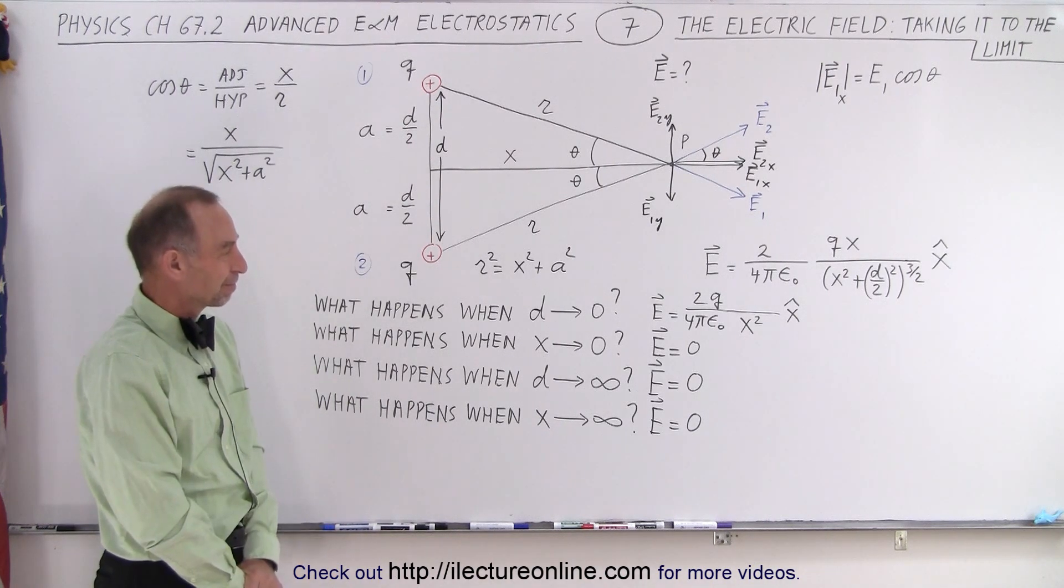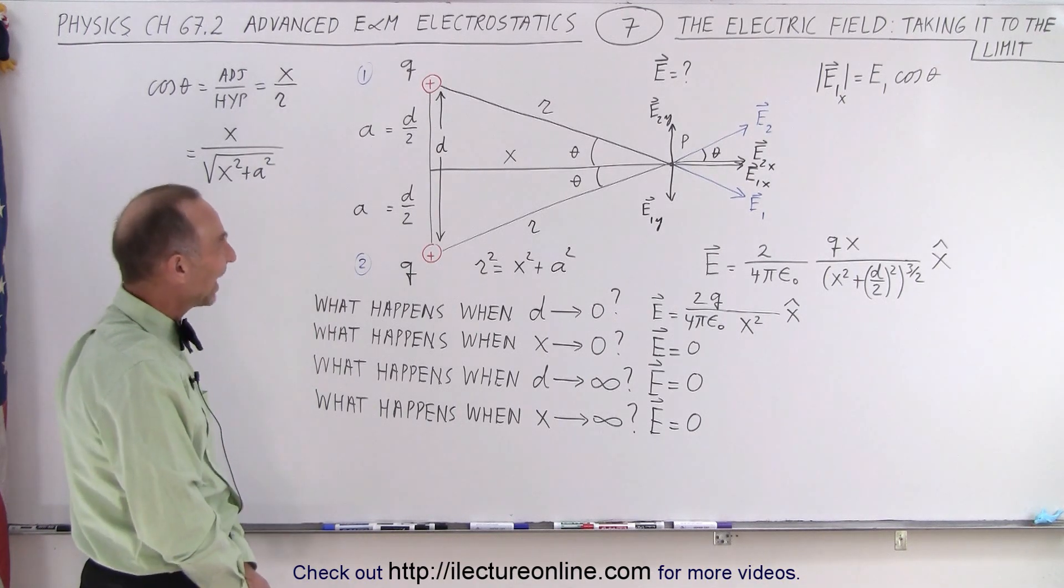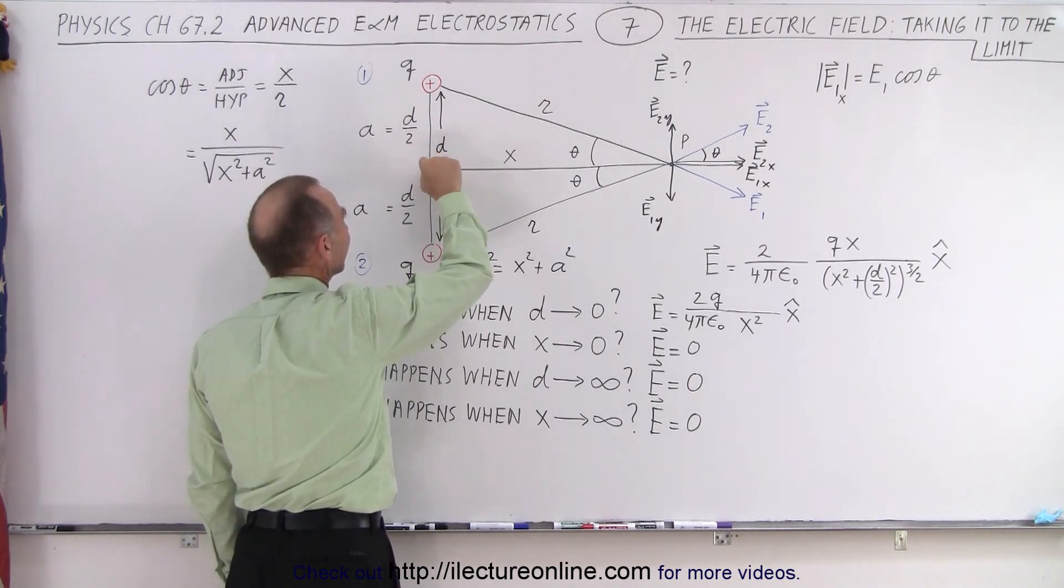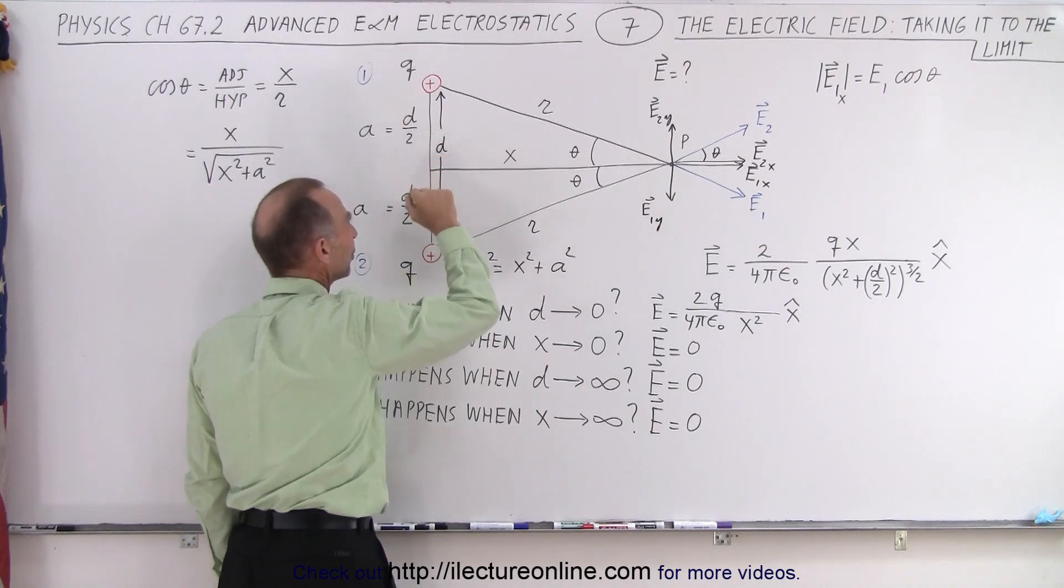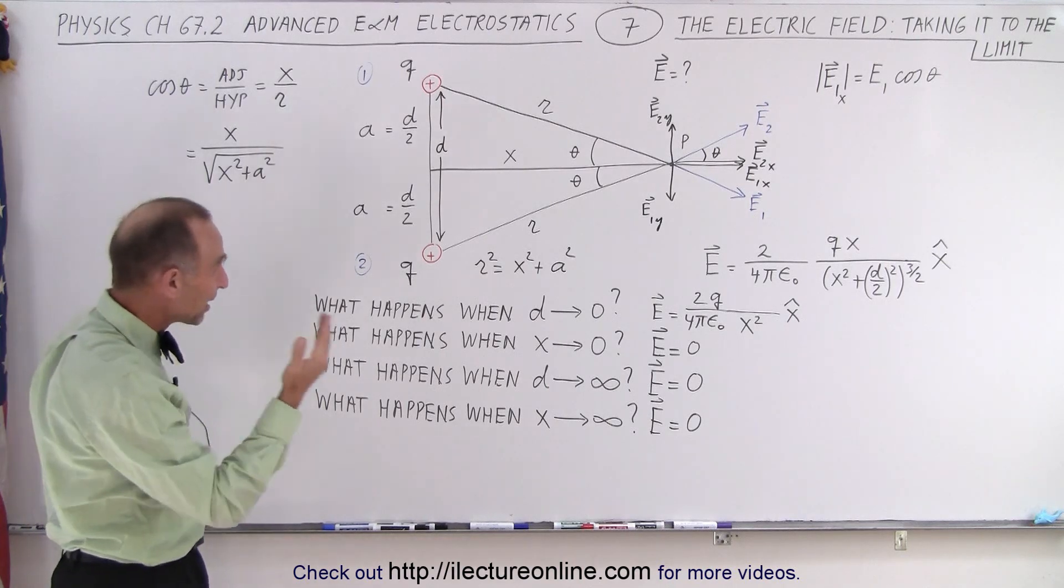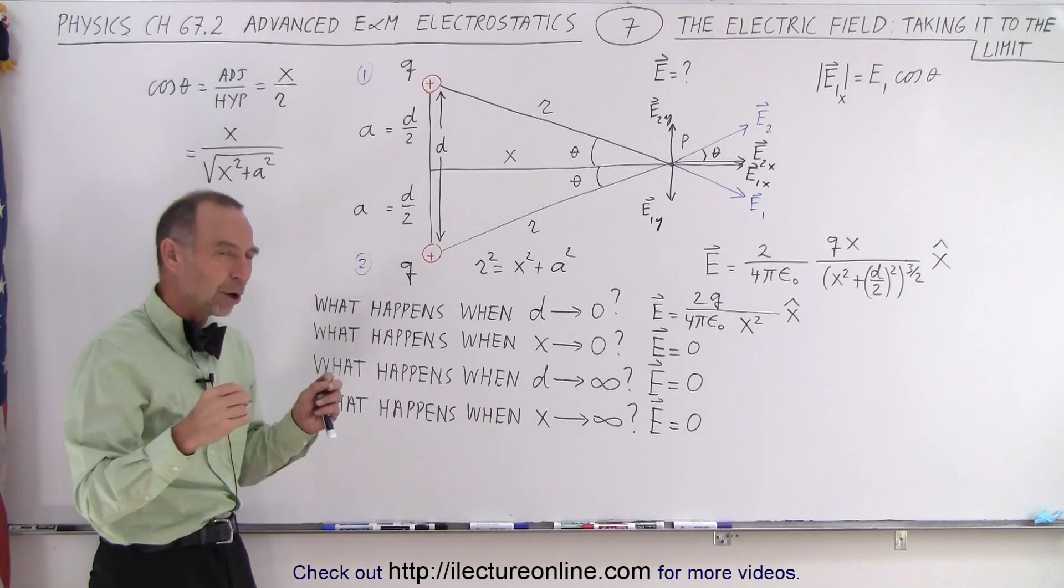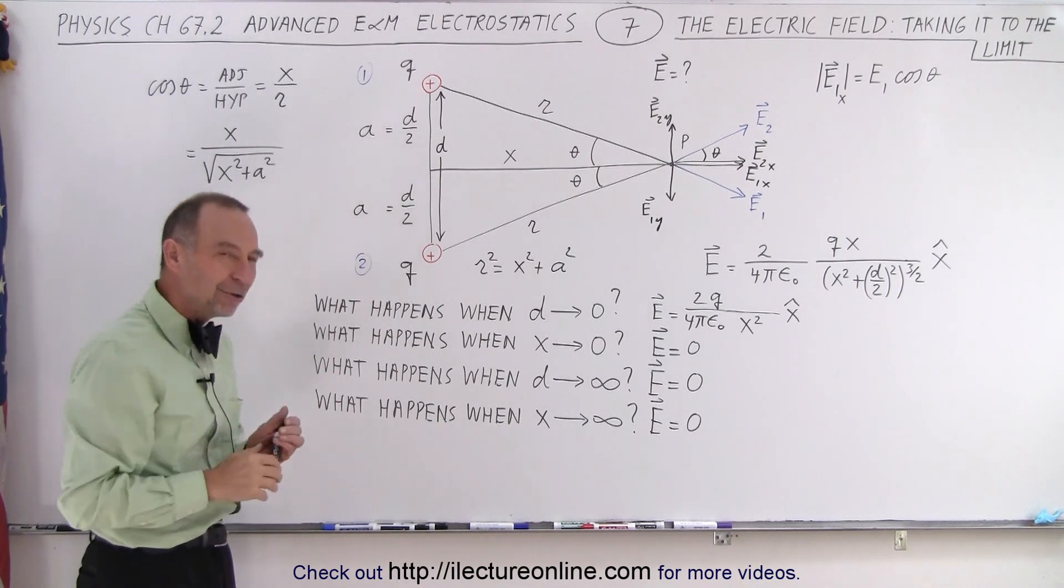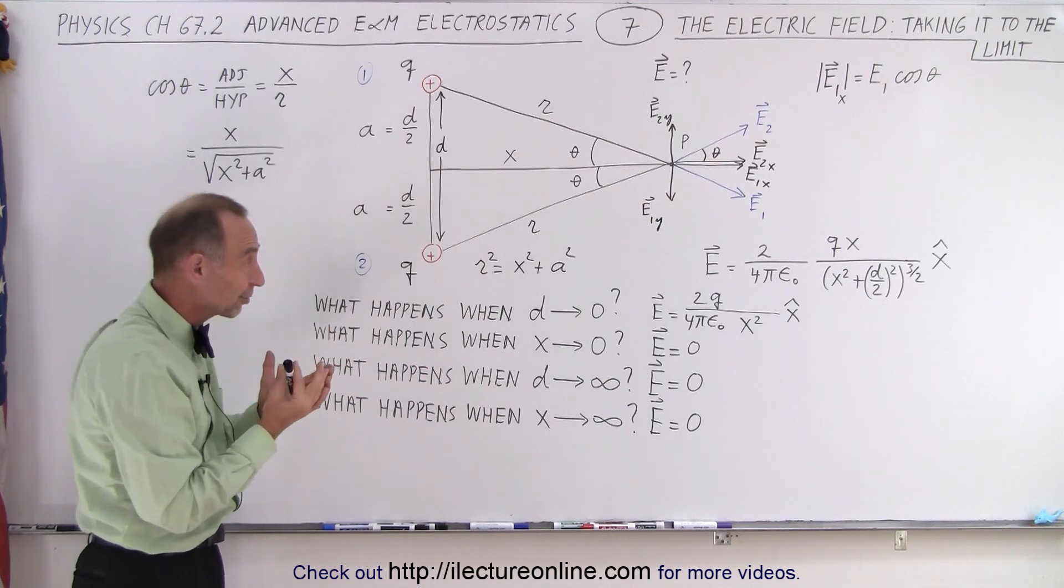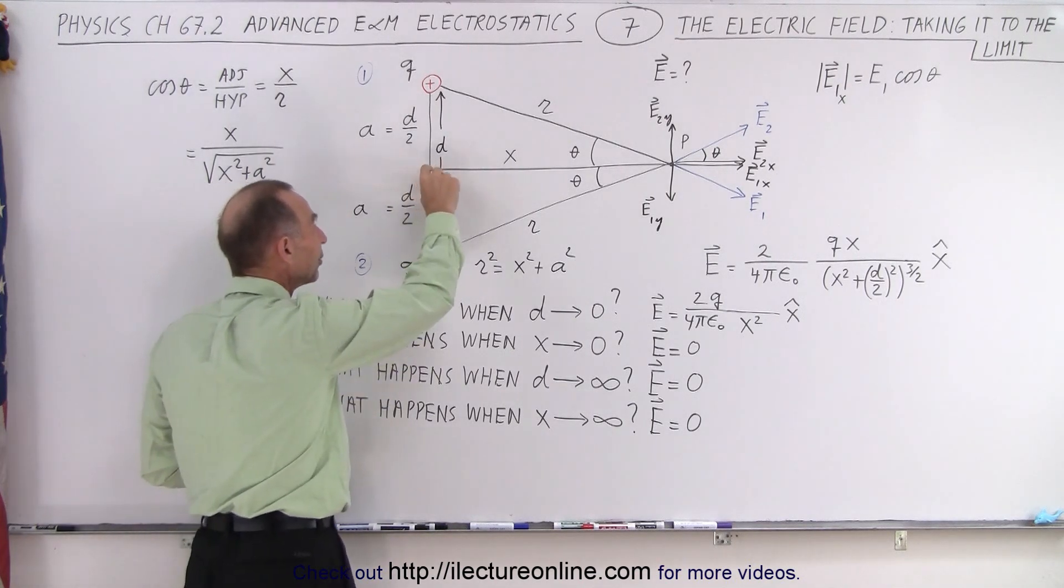What happens when d goes to 0 and x goes to 0? Well, let's see here. When d goes to 0, you have like a point charge of 2q. Now x goes to 0. We're infinitely close. The distance goes essentially to 0. Then you would have what we would call something that's undefined. But if you go back to what we discovered in the last chapter when we talked about the delta function, the three-dimensional delta function, we actually had a really nice definition that allowed you to find some value of the electric field, even though it essentially goes to 0.